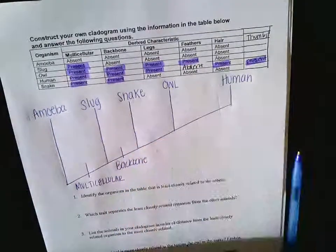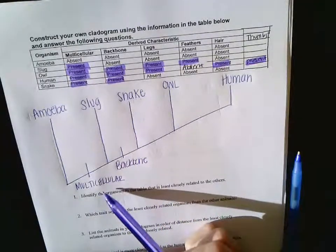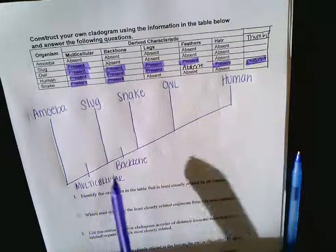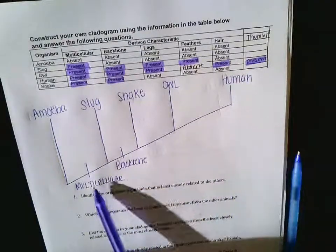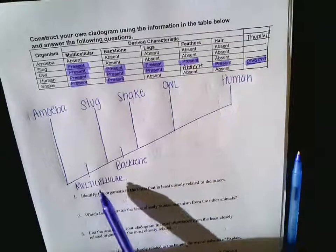So one thing I want to ask you guys before we move forward: does the snake also have multicells? Yes. Everything from the slug forward has multicellular. Everything from the snake forward has the backbone and is multicellular. Are you with me so far?